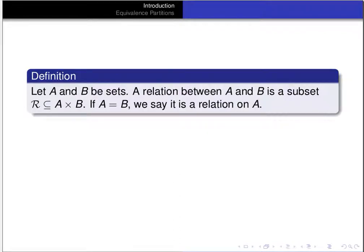Let's recall some basic definitions. If A and B are sets, we say a relation between A and B is just a subset of the Cartesian product A cross B. Now, if the relation R is a subset of A cross A — so the sets A and B are the same — then we say that the relation is a relation on the set A.